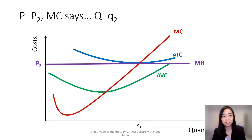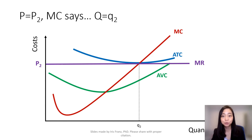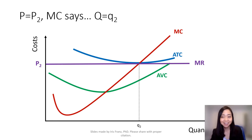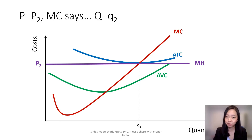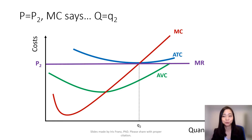Now the price goes down to P2. At the intersection of marginal revenue and marginal cost, the marginal cost curve will tell you: given the price is P2, you should produce Q2.